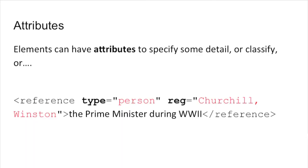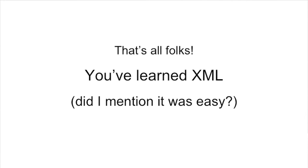We have here in this example two attributes. The attribute 'reg' is used to regularize the reference to the name, which is Winston Churchill — but in the order Churchill, Winston — and we use that because afterwards we will use it for creating an automatic index of names. We also have an attribute 'type' that says which type of reference it is: it is to a person. You also see the syntax: after the element name, there is an obligatory white space, then the name of your attribute, followed by a sign of equal, and the value of the attribute is in between quotes. You can have as many attributes as you want in your element, but the same attribute can only be used once. So that's it — you have learned XML. Didn't I tell you it was easy?